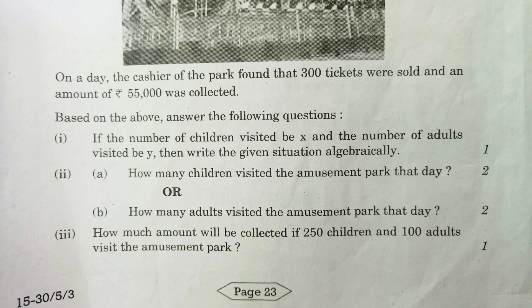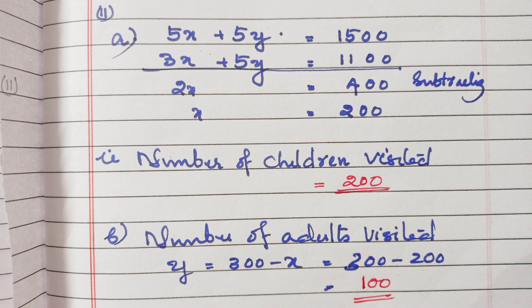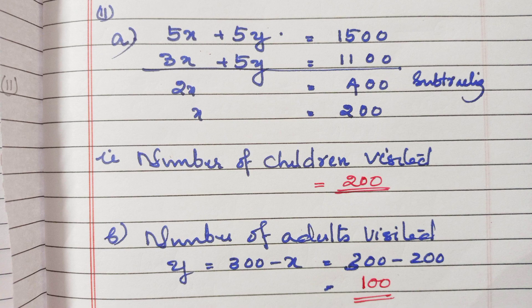The second part of the question is: how many children visited the amusement park that day? The first equation is X plus Y equals 300. Multiplying by 5, we get 5X plus 5Y equals 1,500. Subtracting the second equation, we get X is equal to 200. That means the number of children visited is 200.